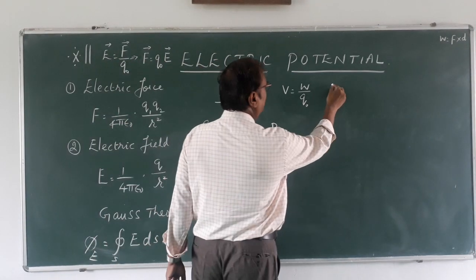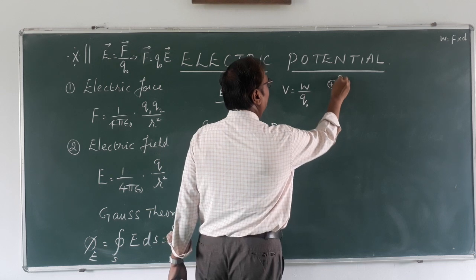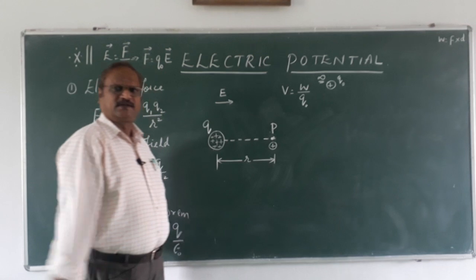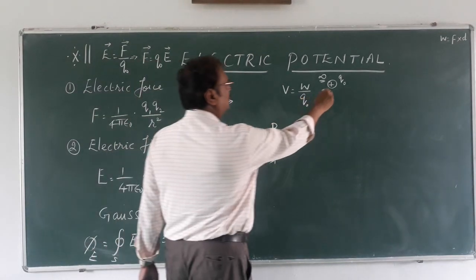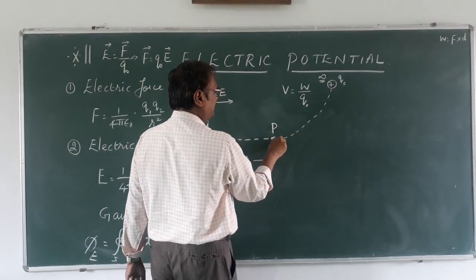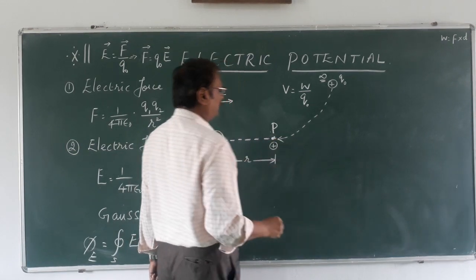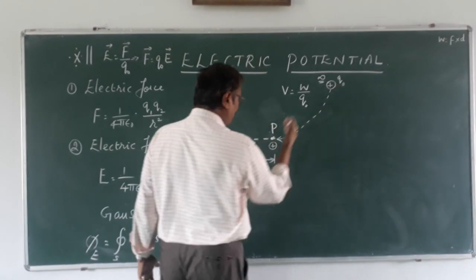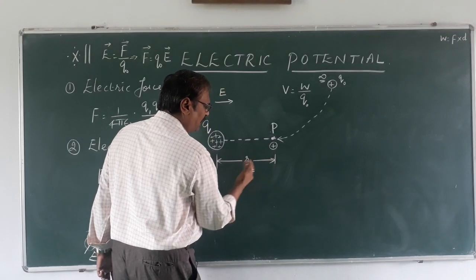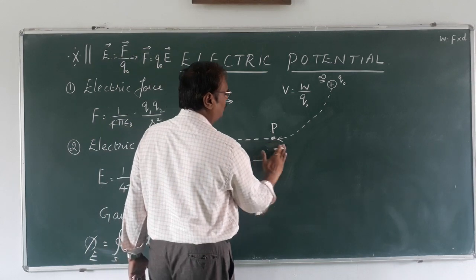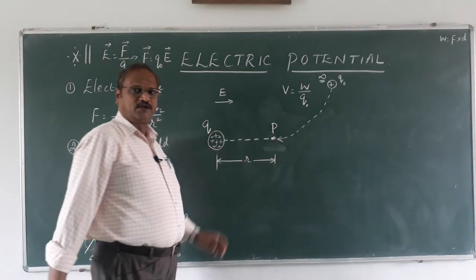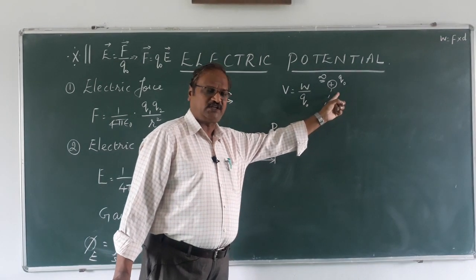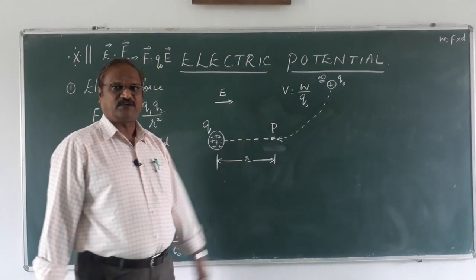The simpler way is to take the test charge from a very far away distance — we call it infinity — and from that distance we bring this charge slowly and place it at point P. The work done in moving the test charge from infinity to that point at distance r from the charge is what we are going to calculate now.